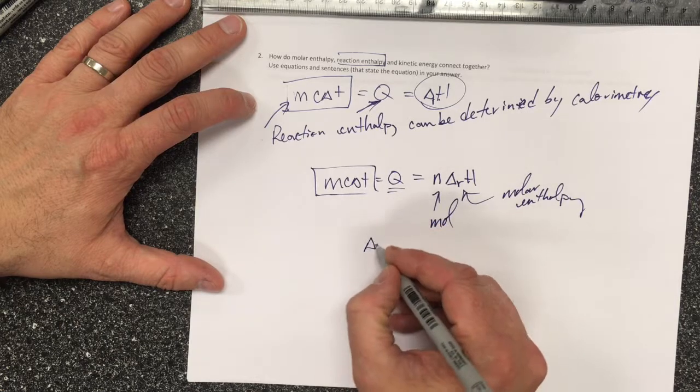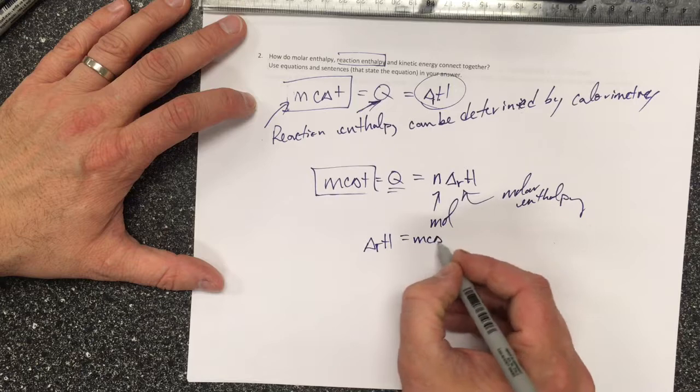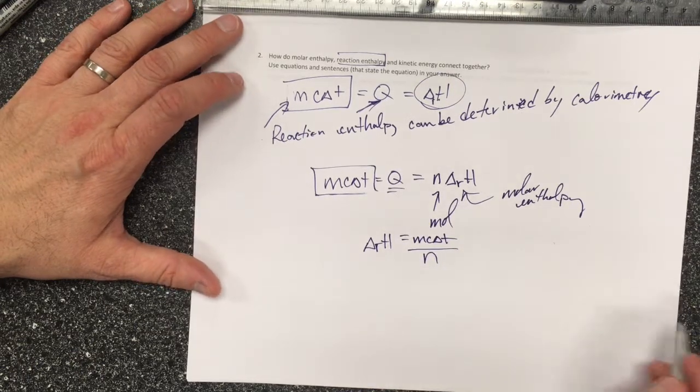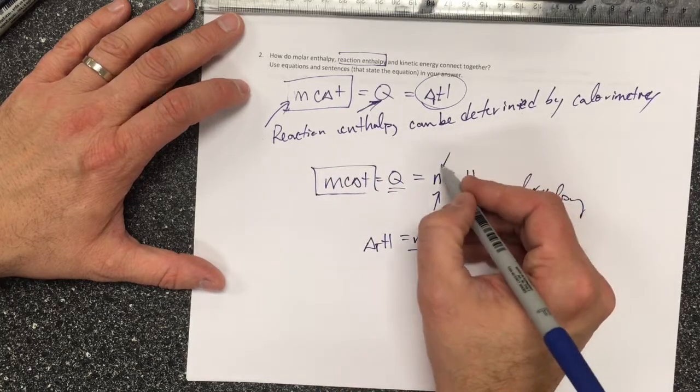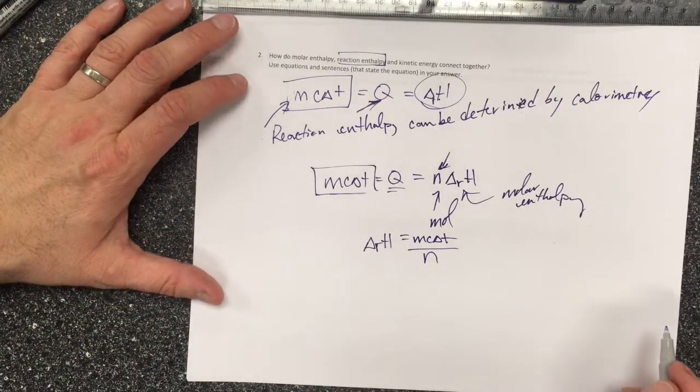So the molar enthalpy equals mcΔT divided by n, the number of moles that reacted. This is the calorimeter, this is the reaction. If I divide the reaction enthalpy by the number of moles that reacted,